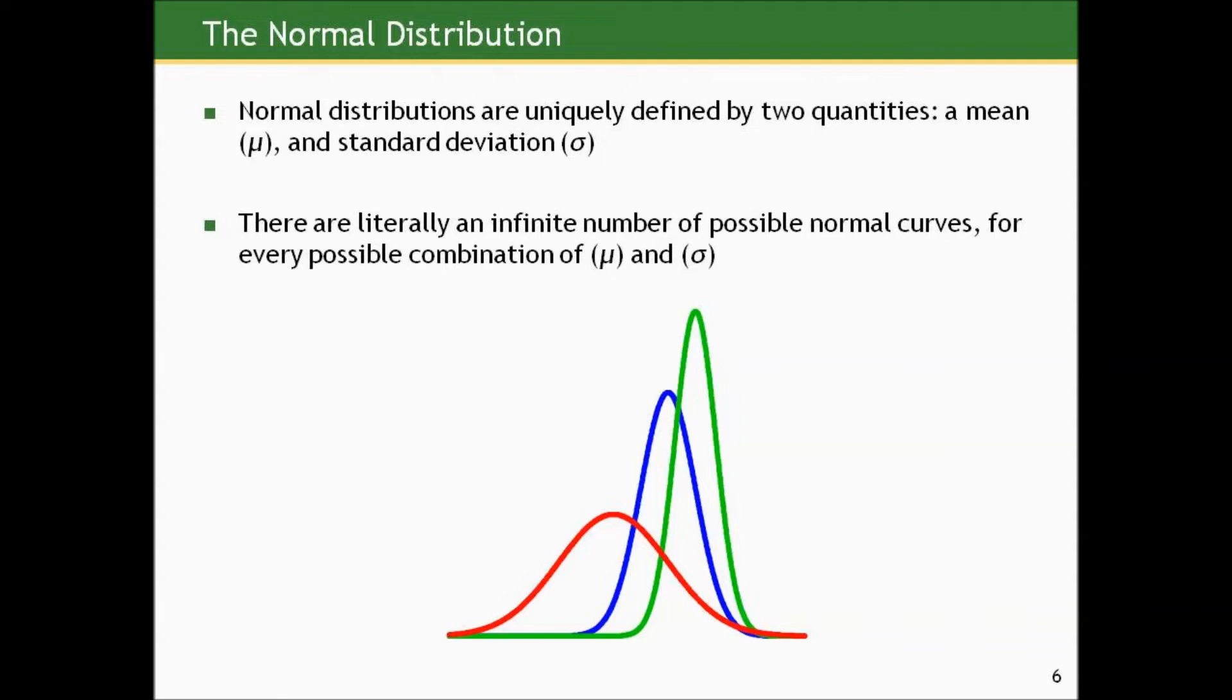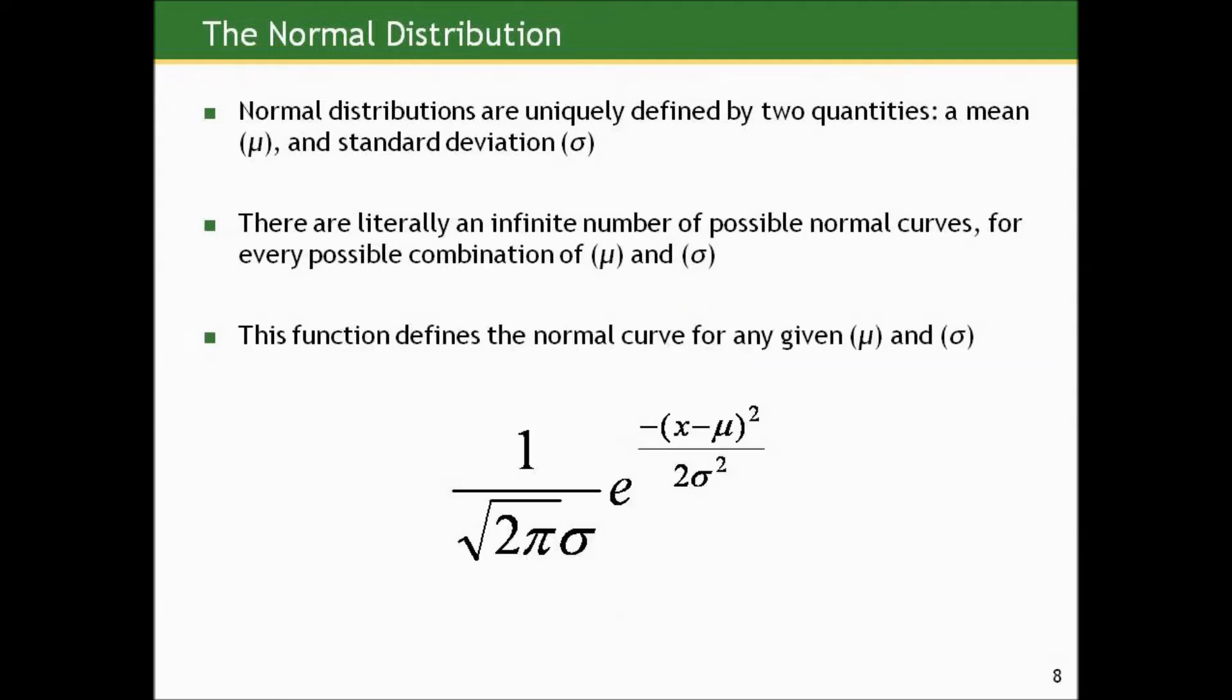These curves are actually defined by a rather complicated function. The function that defines the normal curve for a given μ and σ looks like this, and it's very sexy mathematically. It involves almost every symbol you'd ever want, so it's a great thing to get on a t-shirt if you're a nerd like me. Otherwise you can ignore this. I just want to show you mathematically why μ and σ are all we need to describe this.